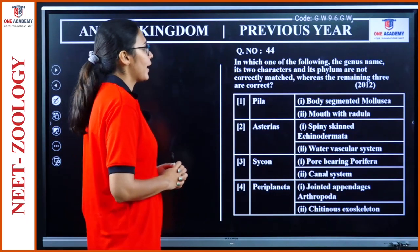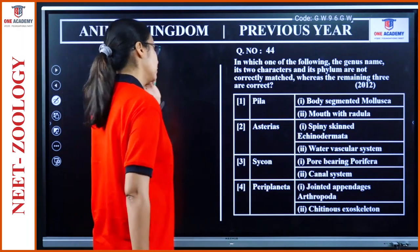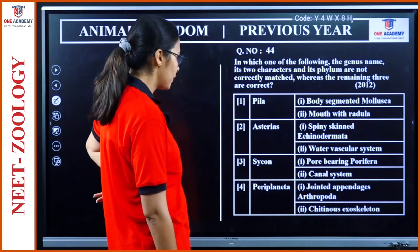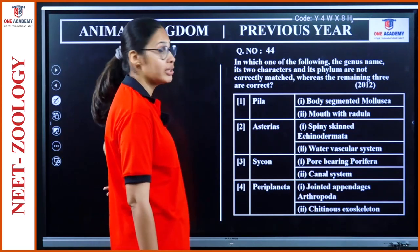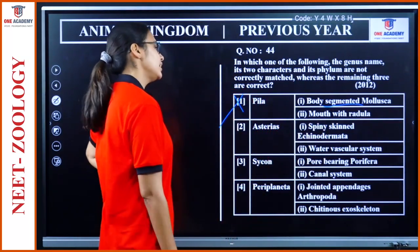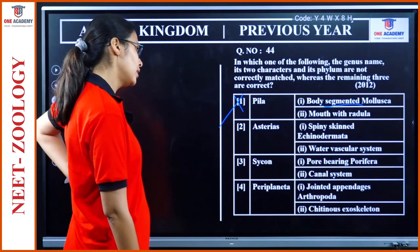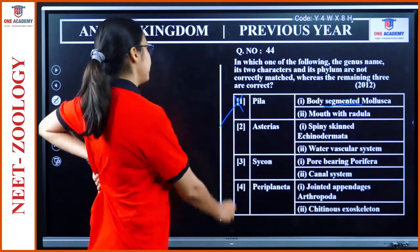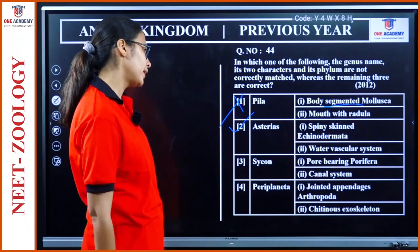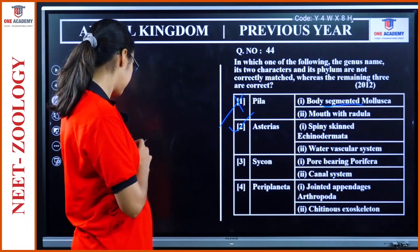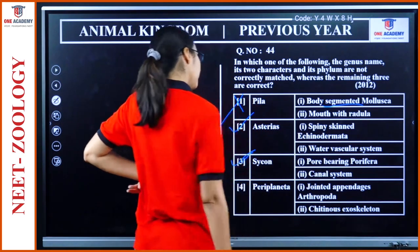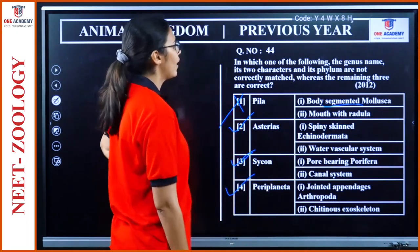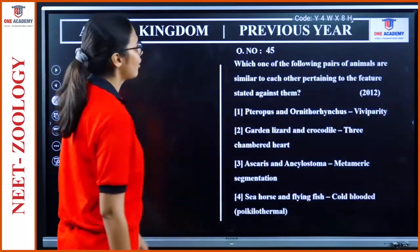Question 44: 'Which genus-character-phylum match is not correctly matched?' Pila — body segmented, mouth with radula — body is not segmented in Pila, so this is incorrectly matched. Asterias — spiny skinned — Echinodermata — correct. Water vascular system — correct for Echinodermata. Periplanata — jointed appendages, chitinous exoskeleton — Arthropoda — correct. The not-correct match is option 1 — Pila.